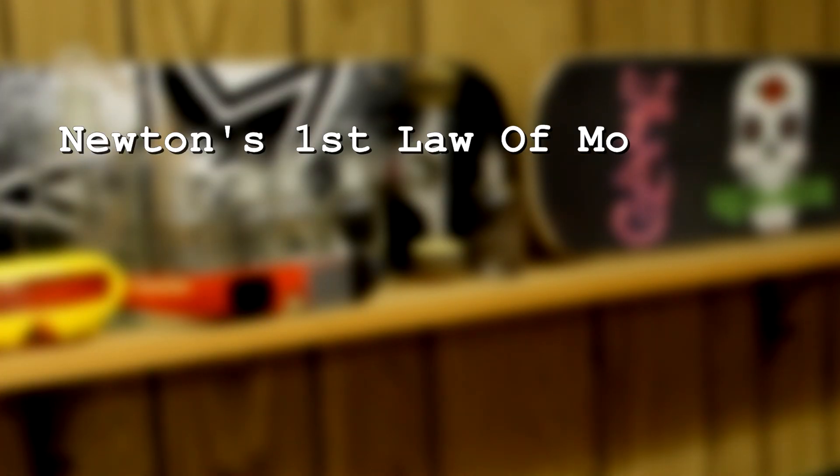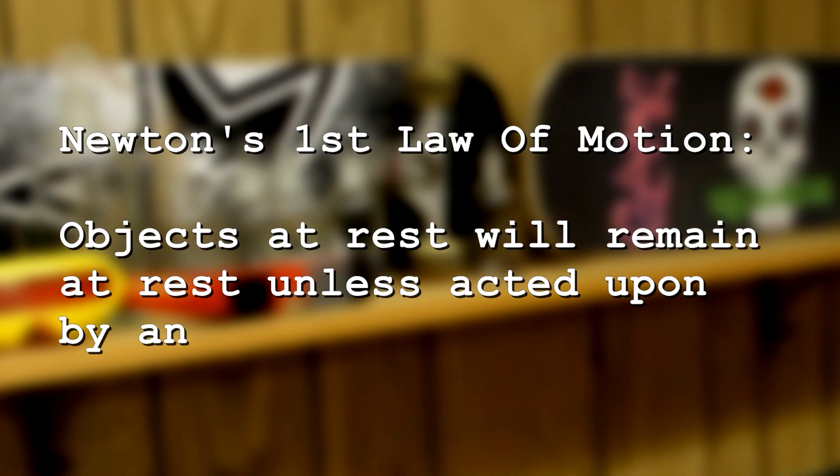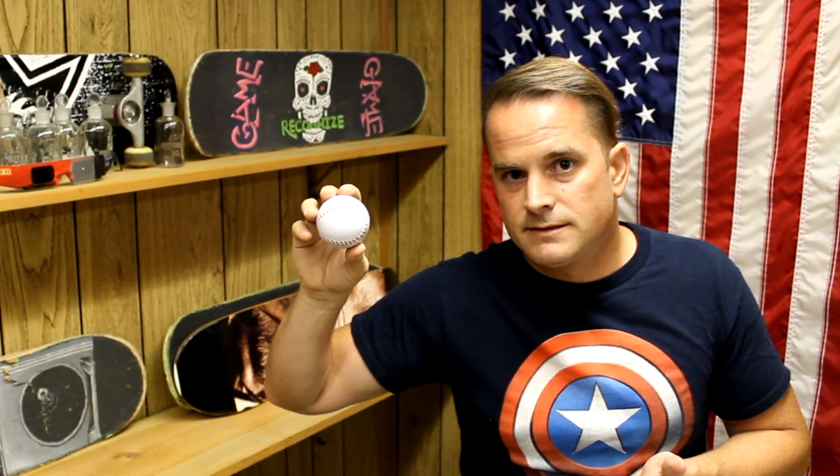What perhaps isn't apparent when first encountering Flat Earth's rejection of gravity is that it's not just a rejection of gravity — they are really rejecting Newton's first law of motion. Objects at rest will remain at rest unless acted upon by an unbalanced force. When I let go of the ball, it moved. Newton's first law says there must have been an unbalanced force acting on it. And because we saw which direction it moved, we also know the direction of that force. The density explanation cannot describe why objects fall in the direction that they do.